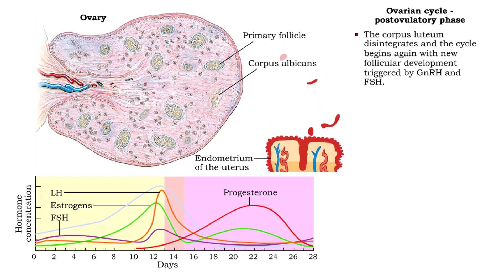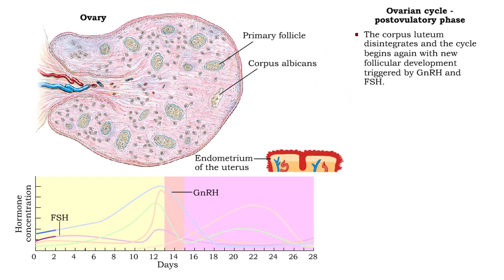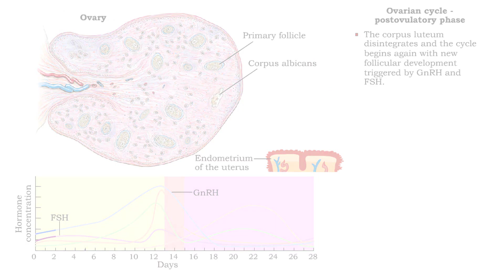And the cycle starts again, with gonadotropin-releasing hormone and follicle-stimulating hormone triggering the maturation of follicles in the ovaries. To be continued.